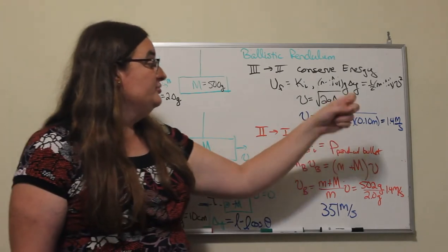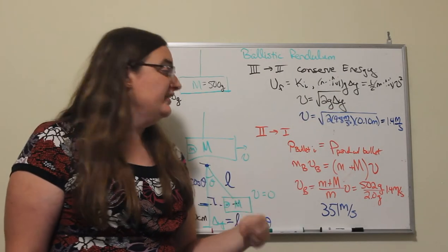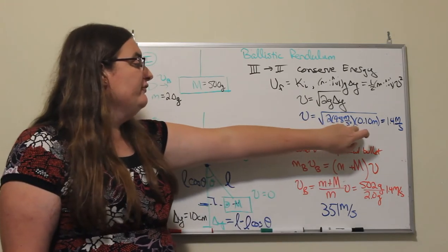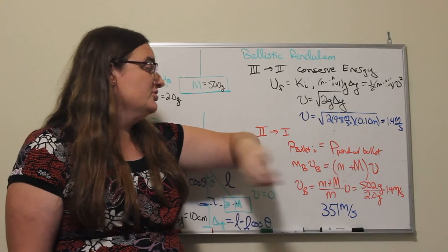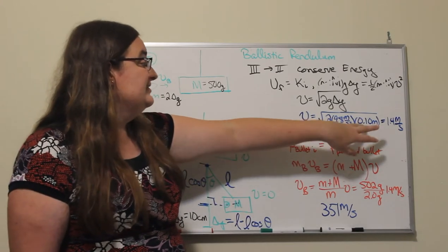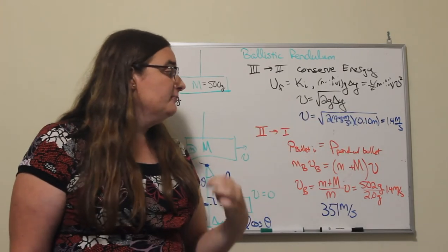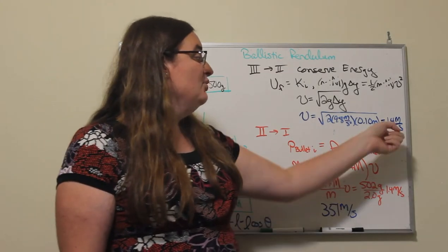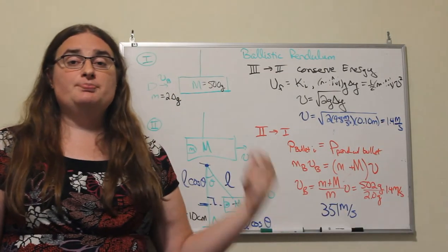So if I take two times 9.8 meters per second squared times 0.1 meters, I get 1.96 meters squared per second squared, and the square root of 1.96 gives me 1.4 meters per second.